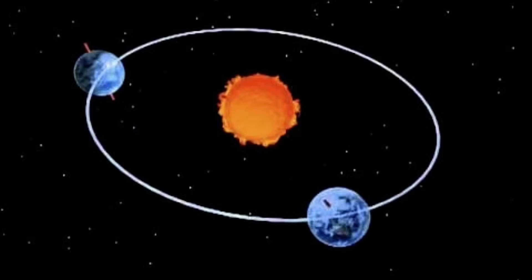The region between the poles on either side of the equator is called the temperate region. In this region of the world where we live, most places experience all four seasons of the year.